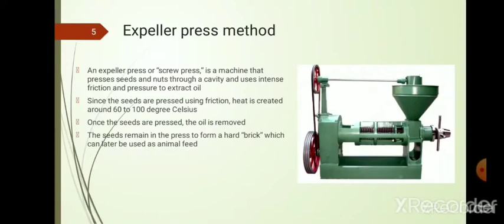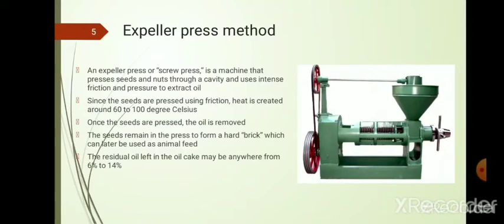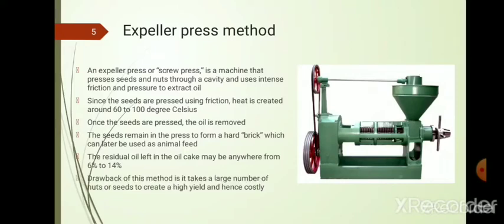Once the seeds are pressed, oil is collected at the bottom. The remaining material in the screw press is called oil cake, which is in the form of a hard brick and can be used for animal feed. The problem is that this oil cake still contains 6 to 14% oil, so the yield is low and more seeds are needed, making it costly — these are the drawbacks of this method.